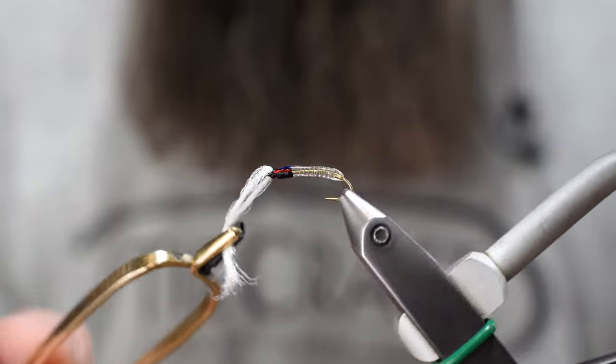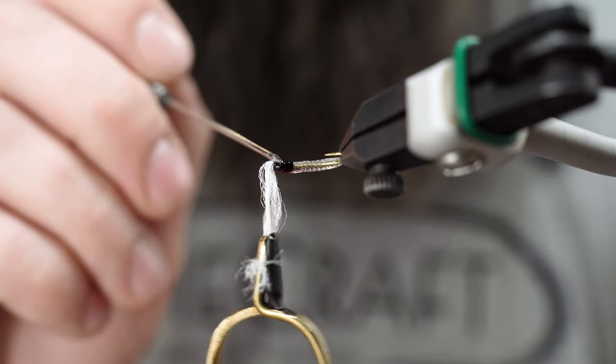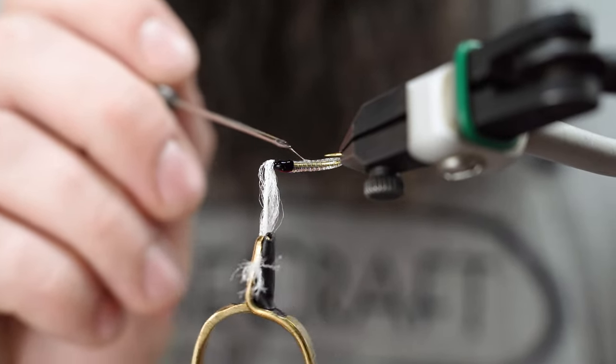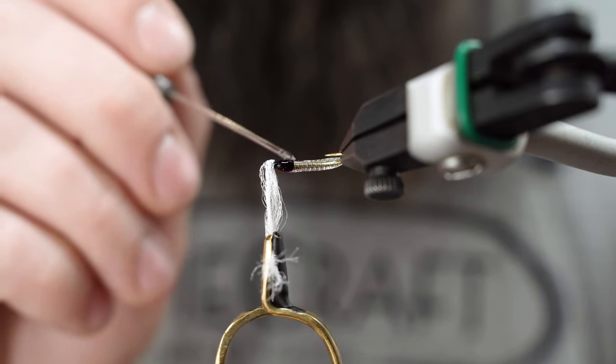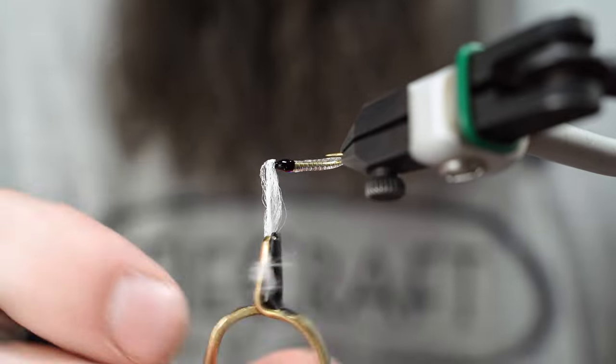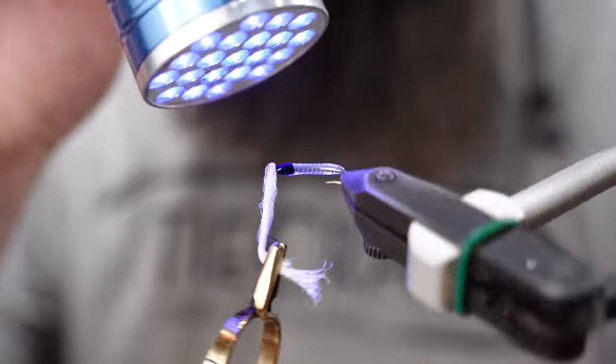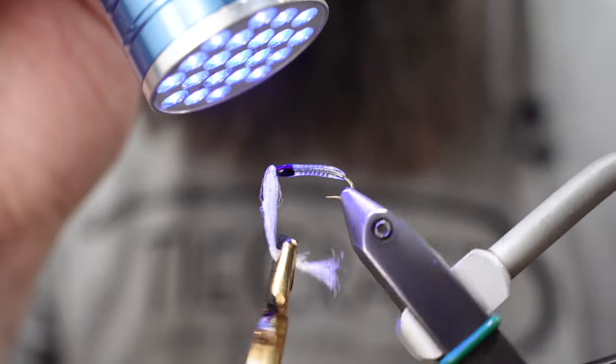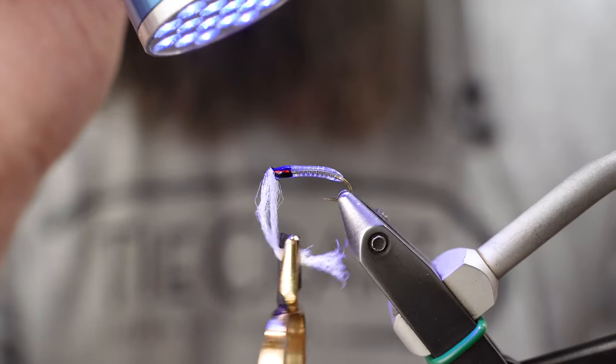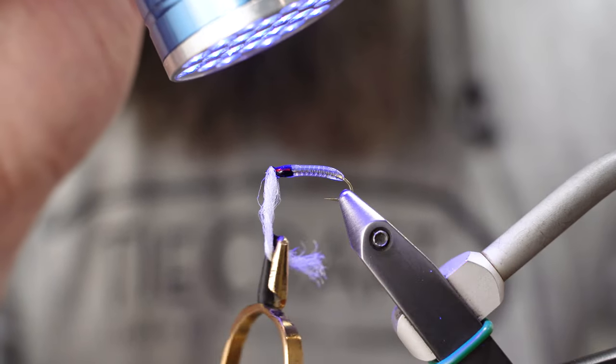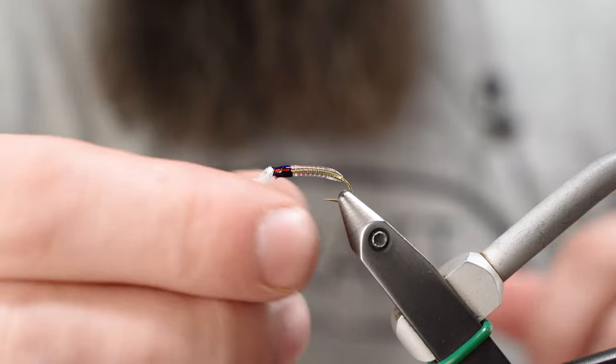Before you cure it, just give it a good look. If you have a rotary, it's definitely an advantage on this particular kind of fly, so you can rotate it around, make sure you got good coverage. Looks pretty good to me, just hit it with the light, cure that glue up, go ahead and release that antron.